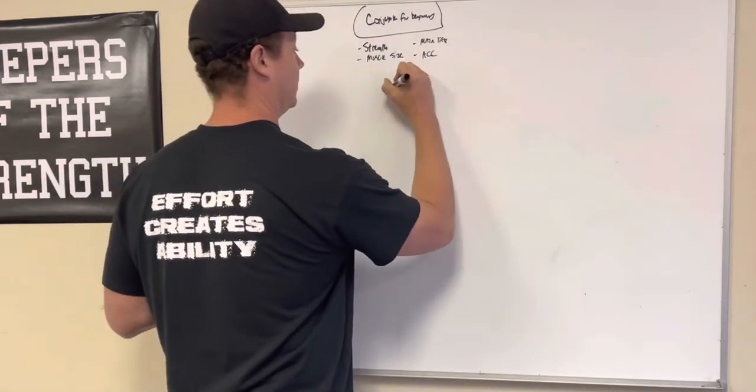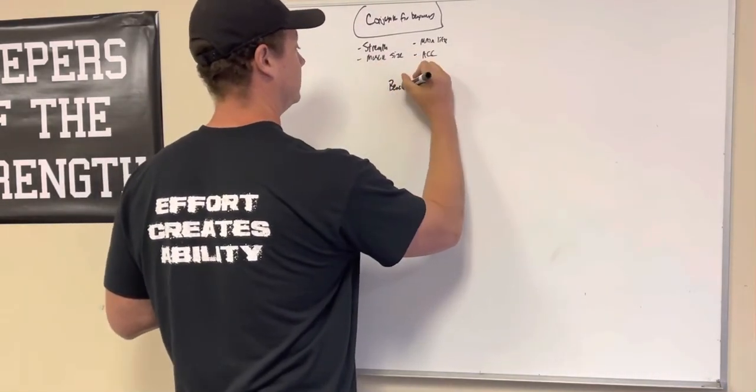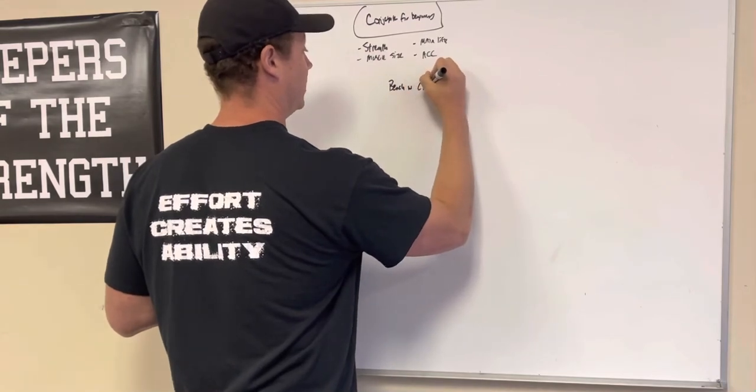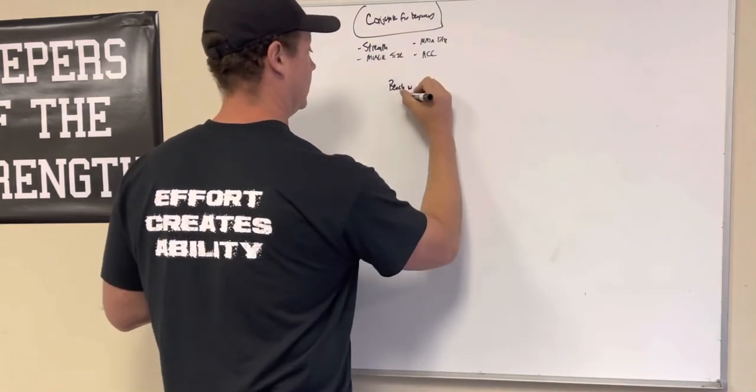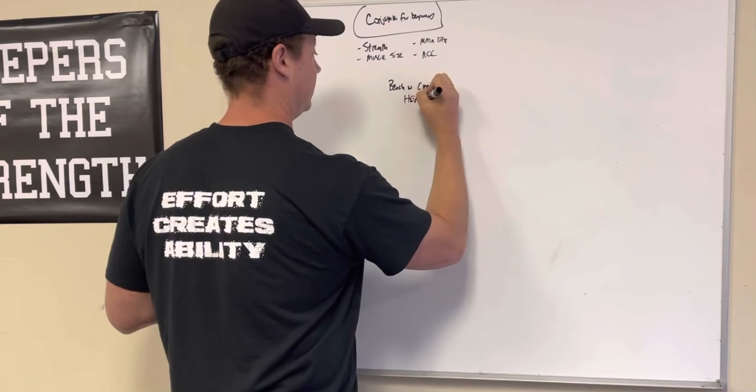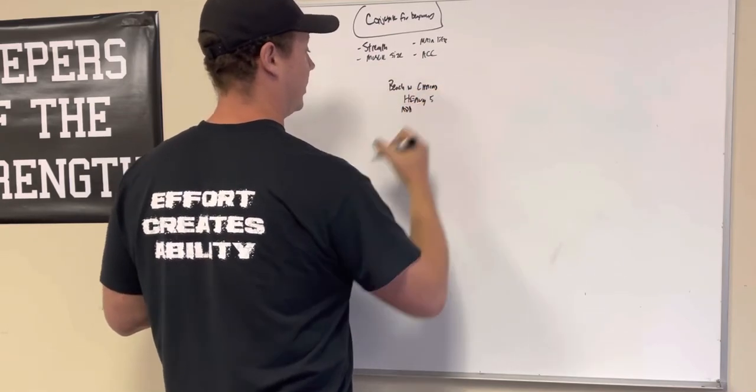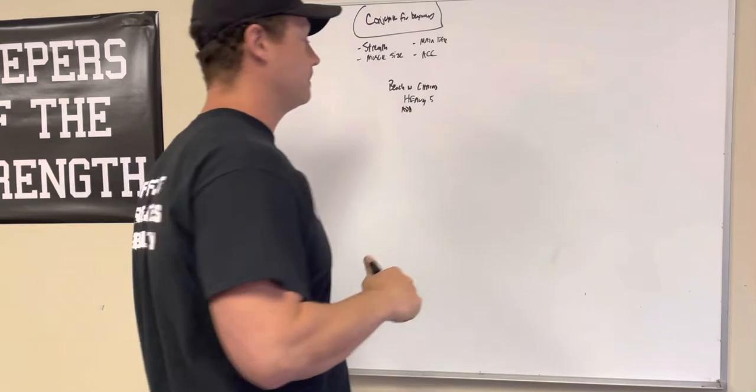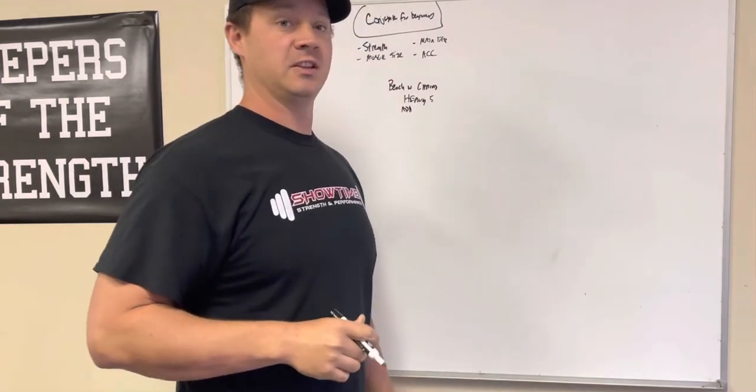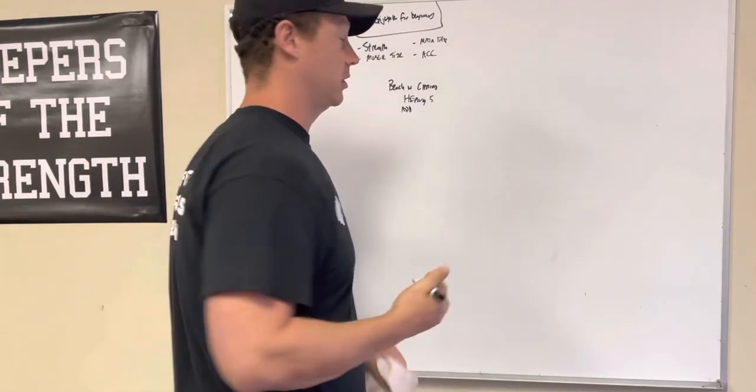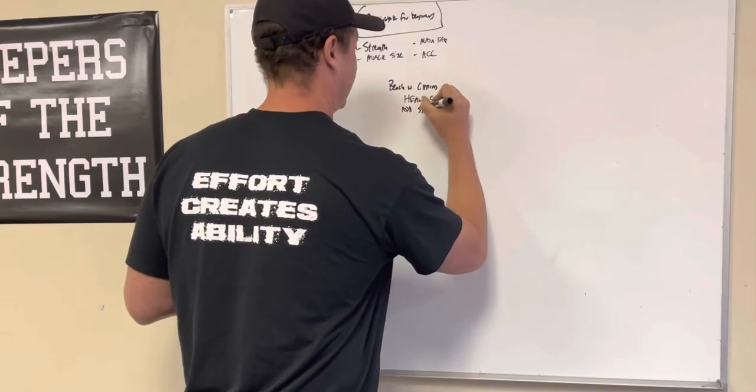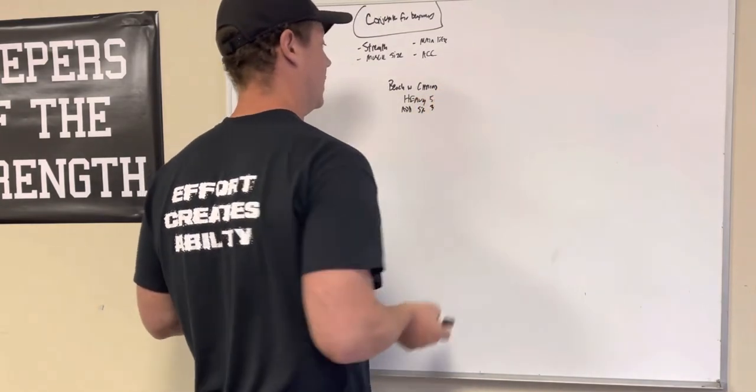So let's look at how that would work on an upper body workout. Let's say you're benching, bench with chains, up to a heavy five. On upper body, I would only go up like five percent. You're not making the same jumps for upper body that you would on lower. So let's say add five percent for a heavy three.